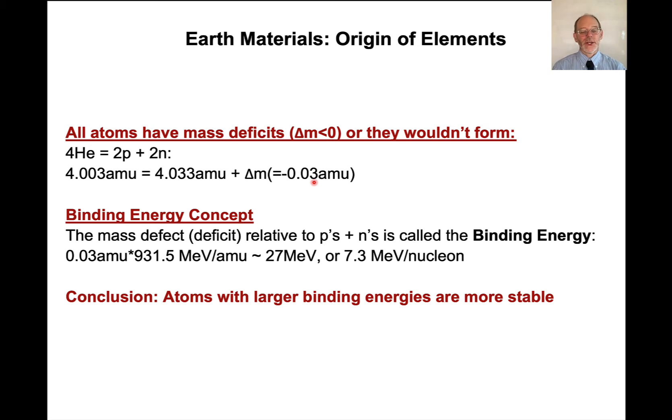highly unstable isotope, you add up, what is it, 92 protons and however many neutrons that leaves behind you, add them all up, they will be more than the mass of a uranium-235 isotope atom.